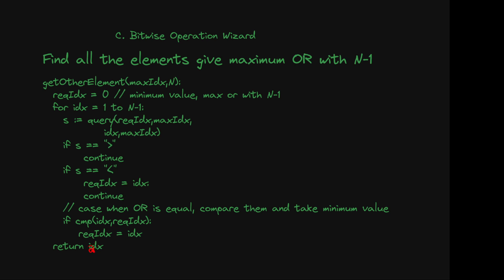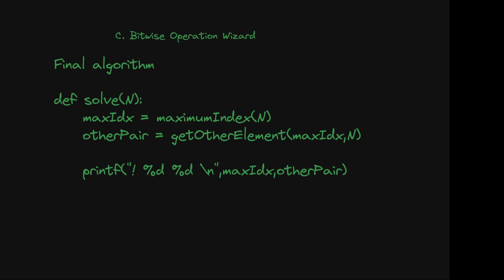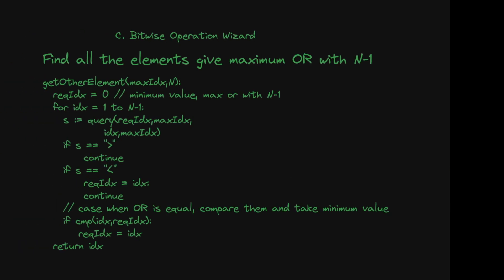The final algorithm: first call find_max_index using n queries to locate where n-1 exists, then call get_other_element with max_index and n to find the paired index, and print both indexes. This algorithm runs in O(n) time. The first loop uses n queries and the second loop uses at most 2n queries (one for OR comparison, one for element comparison when equal), giving 3n queries total.